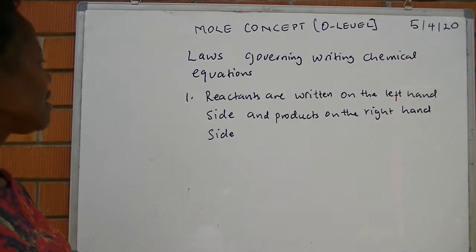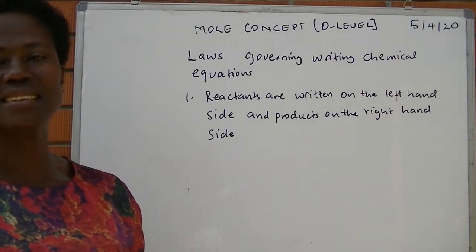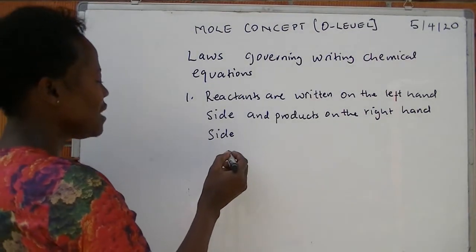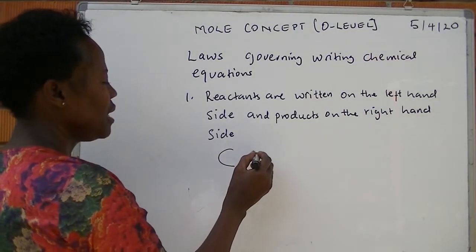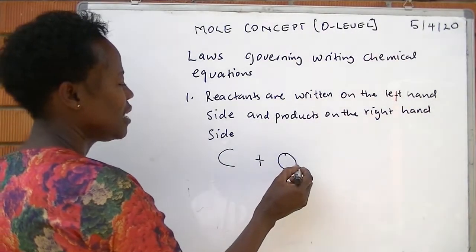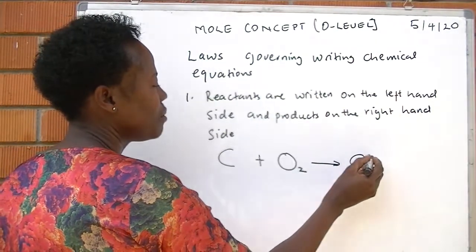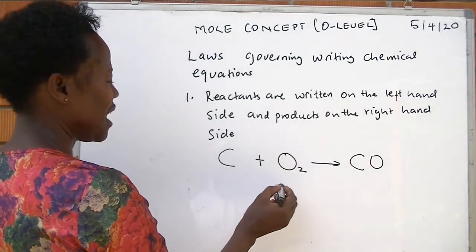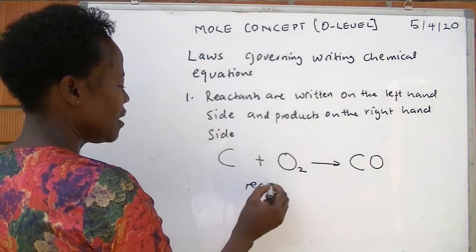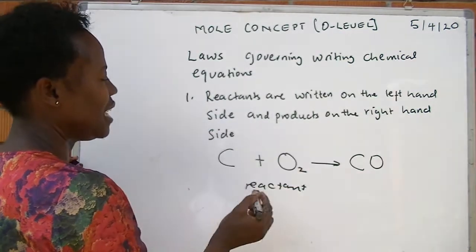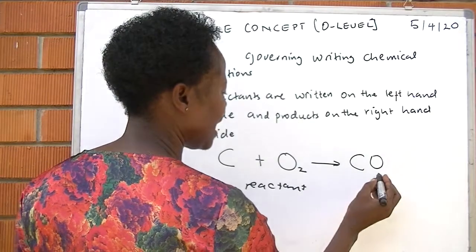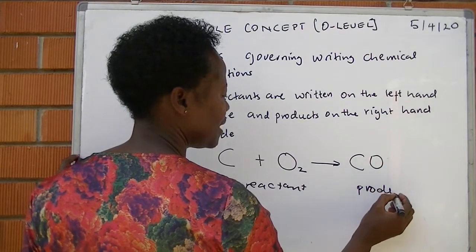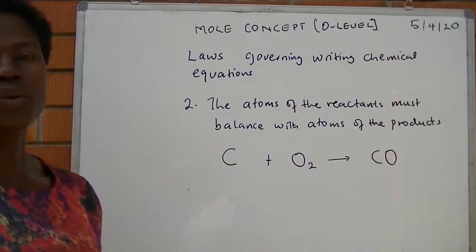The first law is: the reactants are written on the left-hand side while the products are on the right-hand side. Let us consider burning carbon in limited oxygen to give us carbon monoxide. Carbon and oxygen are the reactants written on the left-hand side, and carbon monoxide is the product written on the right-hand side.